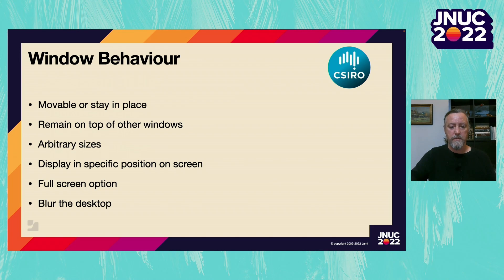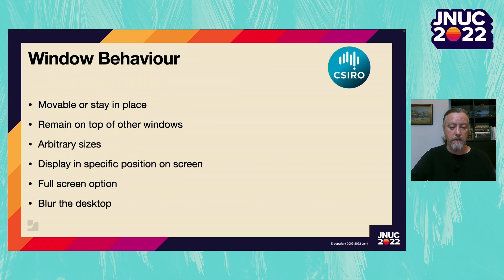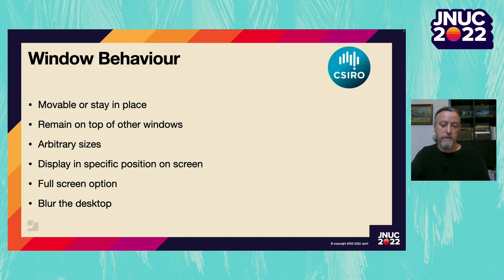Other than formatting the dialog content, you can also change the way the window behaves and looks. You can elect to have the window relocated to a different part of the screen or opt for it to be fixed in place. You can have the window remain in a prominent position on top of all other windows. Windows can be of arbitrary size with width and height controls. You can display the window in any position around the outside of the screen — for example, bottom right or middle left. There is also an option to display full screen or to blur the entire desktop and only display the dialog window.